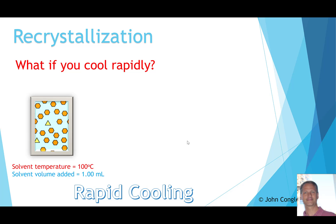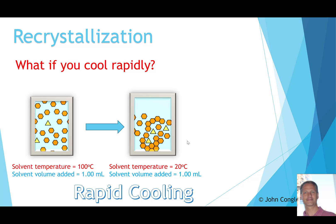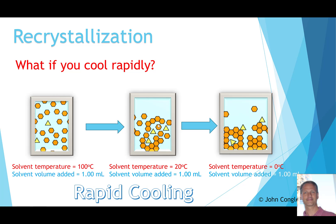What if you cool it too rapidly? It's like throwing all the fruit in the air and using a snow shovel to chuck everything back on the shelf without caring about the grapes — everything gets mixed in. If you go straight from 100 degrees to 20 degrees or put it directly on ice, the impurity triangles don't have sufficient time to be excluded from the crystal lattice. This results in smaller, impure crystals with a lower melting point.